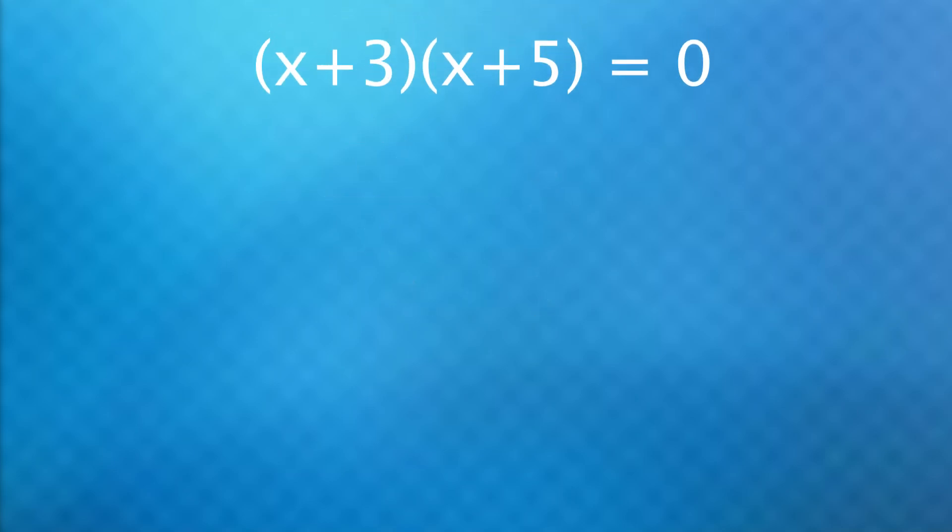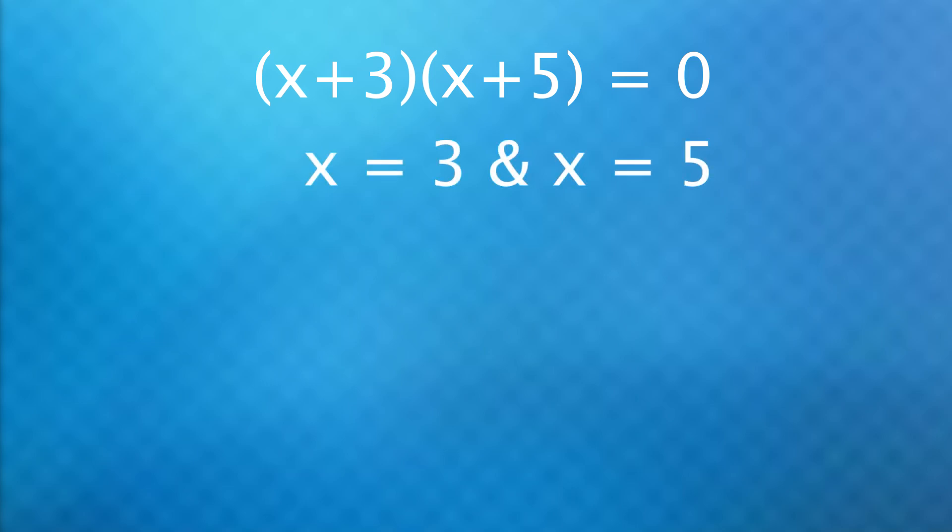Or when you're asked to solve this, some people will accidentally say the answers are positive 3 and positive 5, which is a common mistake and is usually met with, oh yeah, I forgot you're supposed to flip the sign. This is true, but again, you're focused too much on these rules and forget what you're even doing.